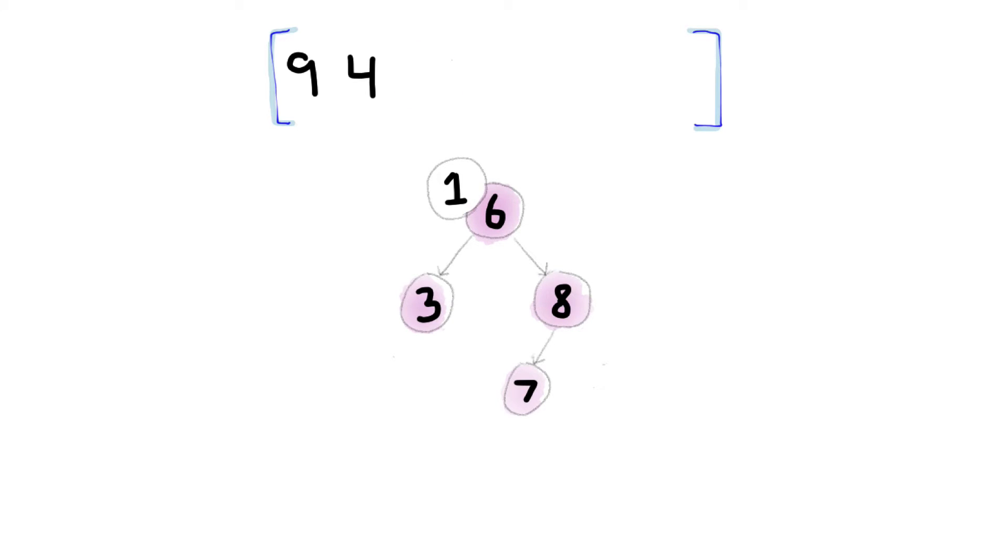One is less than six, so it goes left. One is also less than and left of three. Can you see where this is going? Where will the four end up? Where will the nine end up?